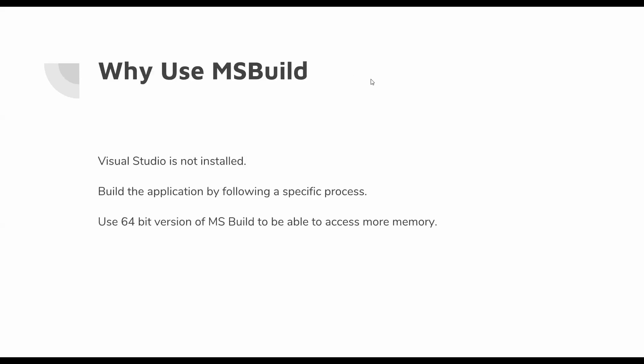Now the question comes to everyone's mind: why should we use MSBuild when we can easily build our application using Visual Studio? There are a number of different reasons for which we can choose to use MSBuild and create a special project file. The first and very obvious one is when Visual Studio is not installed. MSBuild does not need Visual Studio to build project files and solutions, so if you just want to build a project and you don't have Visual Studio installed, then you can use MSBuild to build the project files.